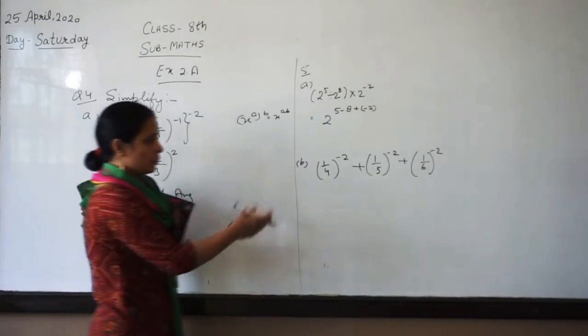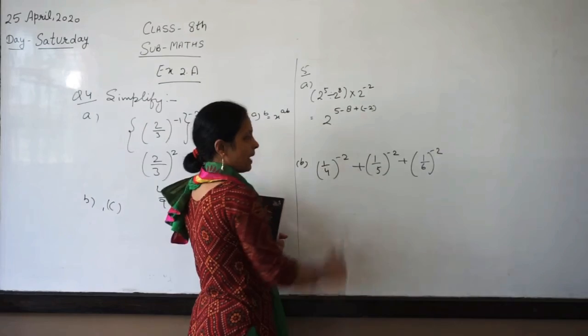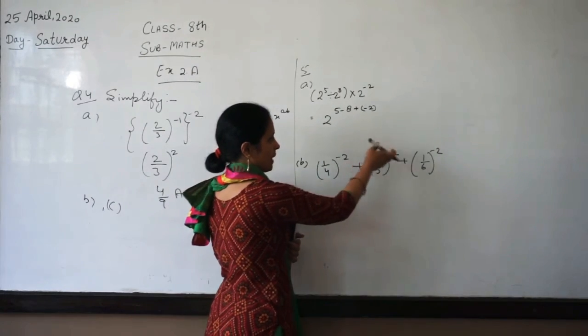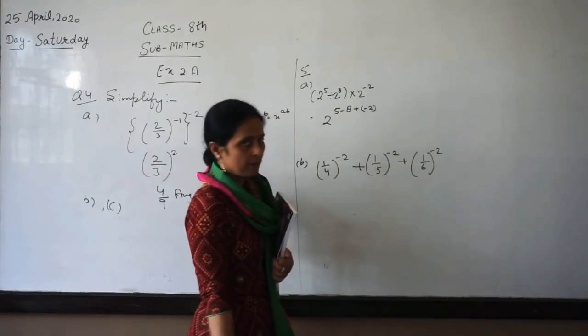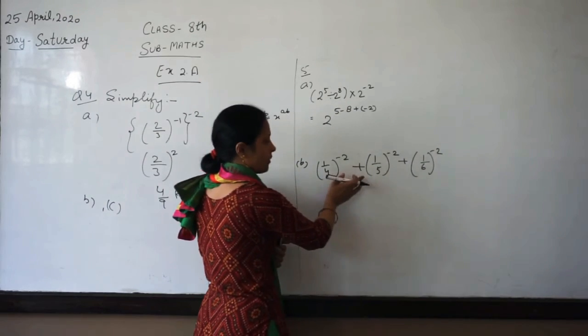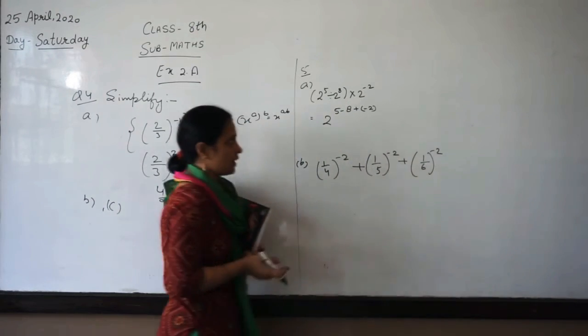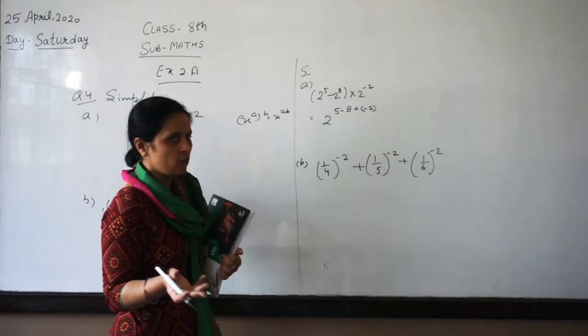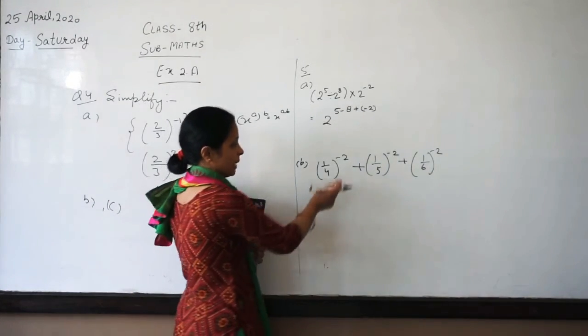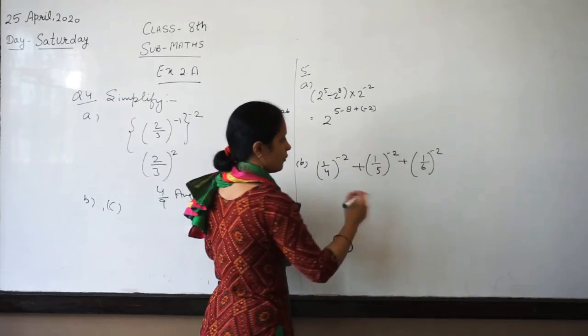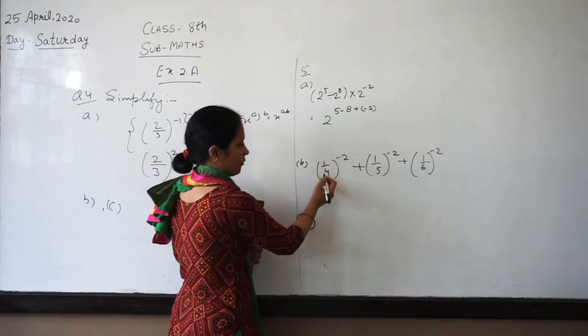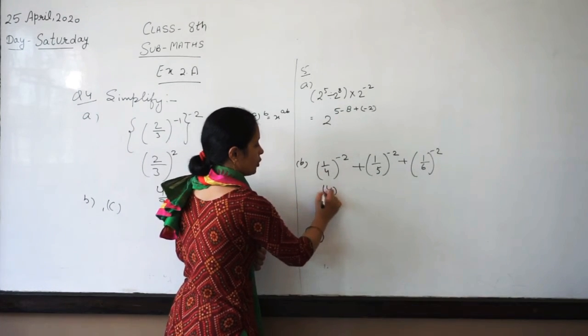Now question number B is 1 by 2 to the minus 2 plus 1 by 6 to the minus 2 plus 1 by 5 to the minus 2 plus 1 by 4 to the minus 2. First, the negative power should be changed. For you, 1 by 4 becomes 4 to the power 2.